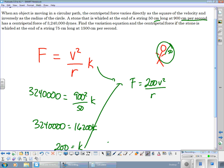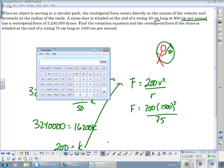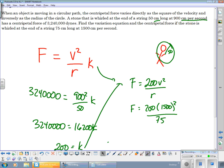If you have a string of 75 centimeters long, and moving at 1,500 centimeters per second. So, it's going to be 200 times 1,500 squared divided by 75. So, 200 times 1,500 squared. And all of that divided by 75. That's going to be 6 million dynes.